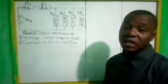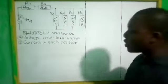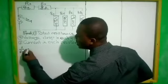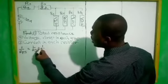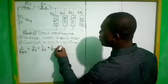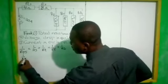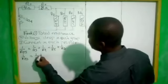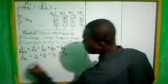First of all, when the question is given like this, we have to find the equivalent resistance in the parallel group. So we say: 1 over R_total in the parallel group is equal to 1/R3 plus 1/R4 plus 1/R5 plus 1/R6. That is 1/12 plus 1/6 plus 1/7 plus 1/10.